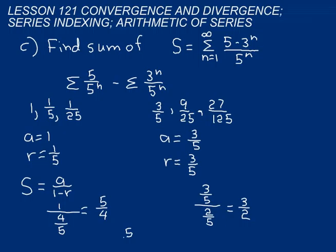All we have left to do now is subtract the two. Five over four minus three over two, which would just be the same thing as six over four, equals a negative one over four.